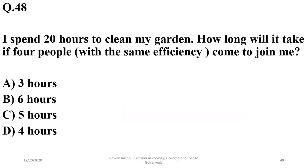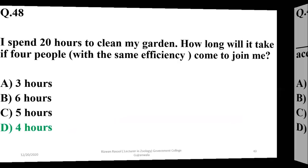Question 48: I spent 20 hours to clean the garden — how long will it take 4 people with the same efficiency? Total is 5 people, so 20 divided by 5 equals 4. The right option is D.